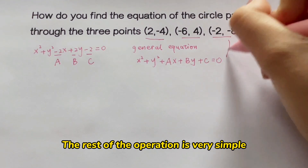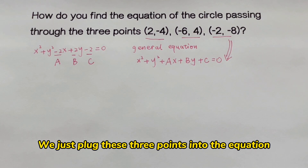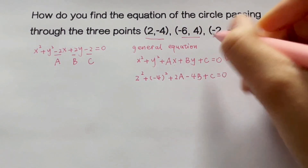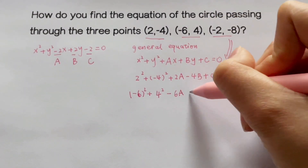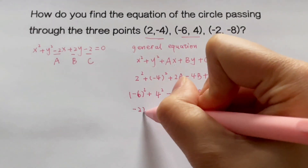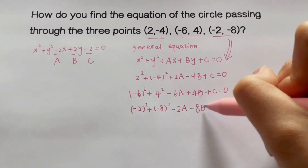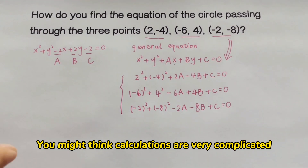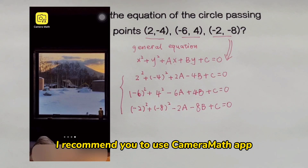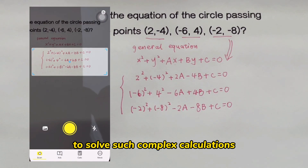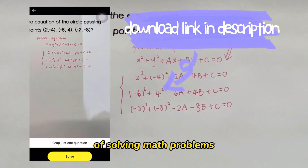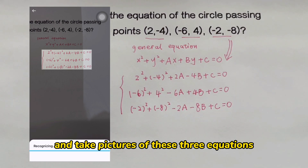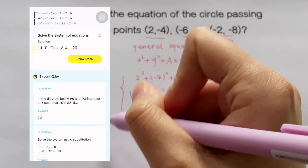The rest of the operation is very simple. We just plug these three points into the equation, and three new equations can be obtained. You might think the calculations are very complicated. I recommend you use the Camera Math app to solve such complex calculations. This app can improve the efficiency of solving math problems. Open the app and take pictures of these three equations, and we can quickly get the values of a, b, and c.